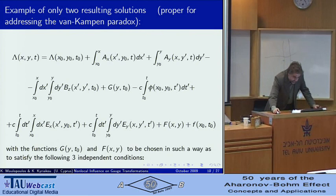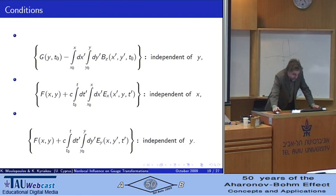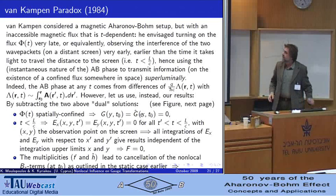And this actually results give a very natural. Here are the conditions that these various quantities have to satisfy, the quantities that appear in the results, G, F, and F. And this result gives a very natural resolution of something that is called Van Kampen paradox back in 1984.